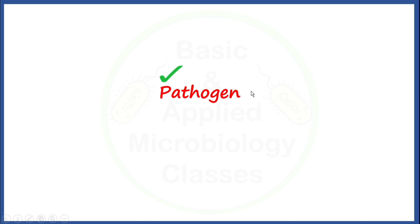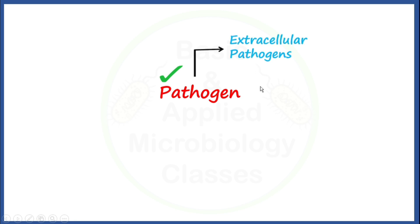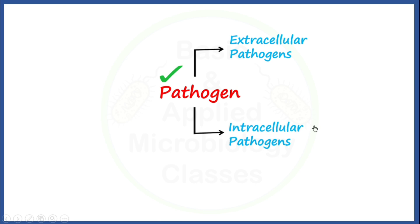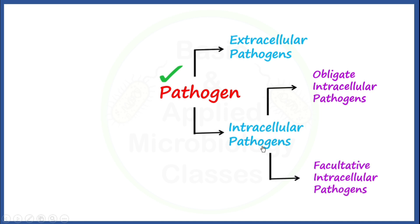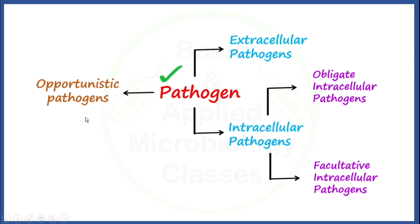Let's see what types of pathogen we are going to cover in this video. The first type is extracellular pathogen. The second type is intracellular pathogens, which are further of two types: obligate intracellular pathogens and facultative intracellular pathogens. And the third type is opportunistic pathogens.